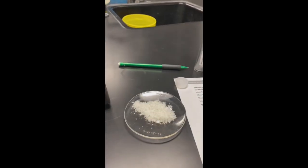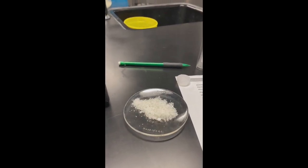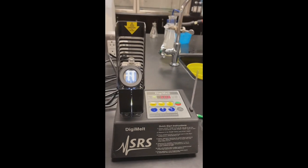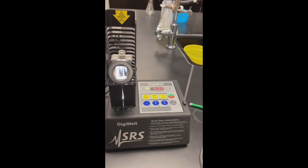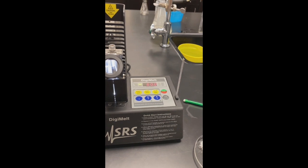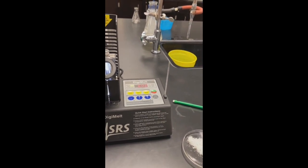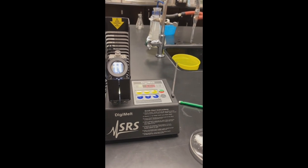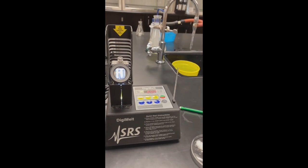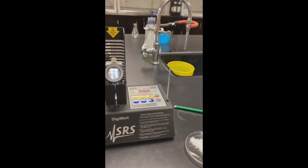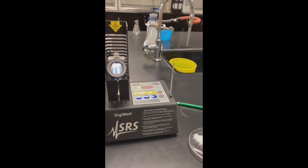We're going to take the melting point of our product here. I'm going to be using the Digimelt apparatus. I started it at 60 degrees, and I have the ramp rate at 2 degrees per minute. What's going to happen is I'm going to get the melting point range, and I'll be giving that to you. The technique I used is exactly the same technique we used in Experiment 1, and I'll come back with you with our range.